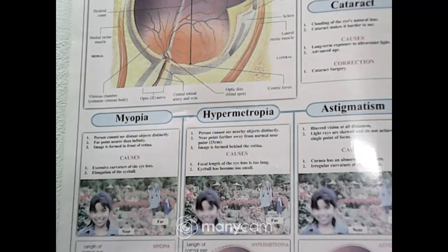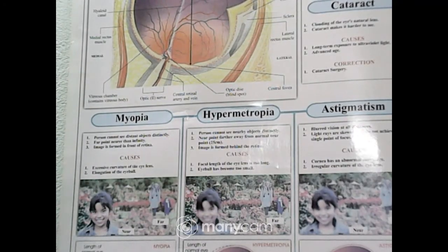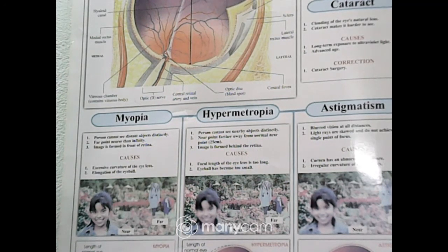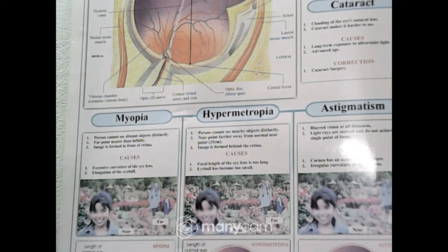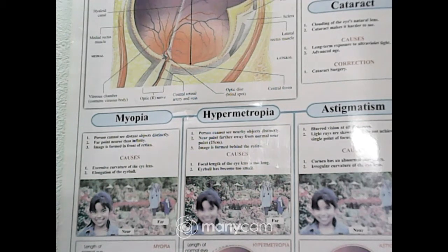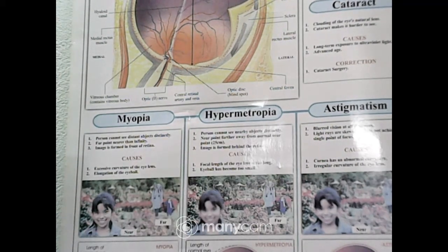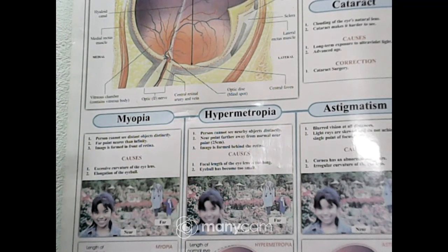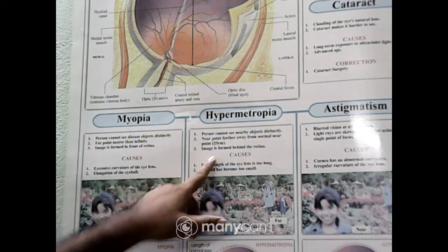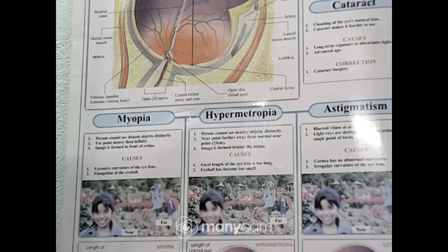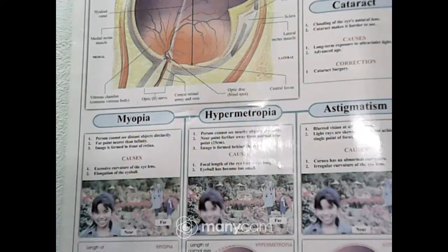Presbyopia means that one cannot fix the power of accommodation. In this disease, people cannot see nearby objects properly, similar to hypermetropia. For correction: myopia is corrected by concave lens, hypermetropia is corrected by convex lens, and presbyopia uses a bifocal lens.